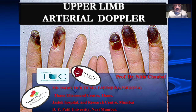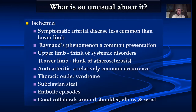I'm Dr. Nitin Sohman and I'm going to talk on upper limb arterial Doppler. What is very unusual about upper limb arterial Doppler is that symptomatic arterial disease is less common in the upper limb compared to the lower limb. One of the most common presenting features of upper limb ischemia is Raynaud's phenomenon — episodes of discoloration in the fingertips, typically during cold season or sometimes with emotional trauma.